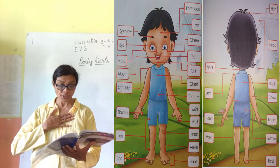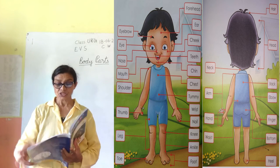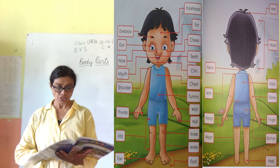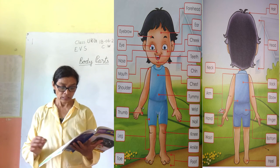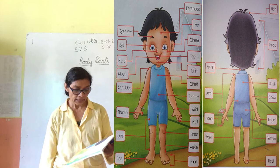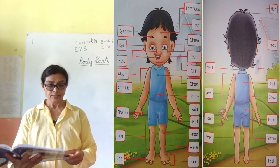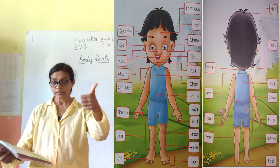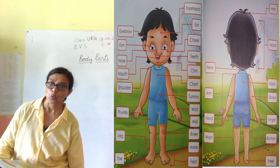Chest, tummy, wrist, nails, knee, ankle, foot, and shoulder, thumb, leg, toe.